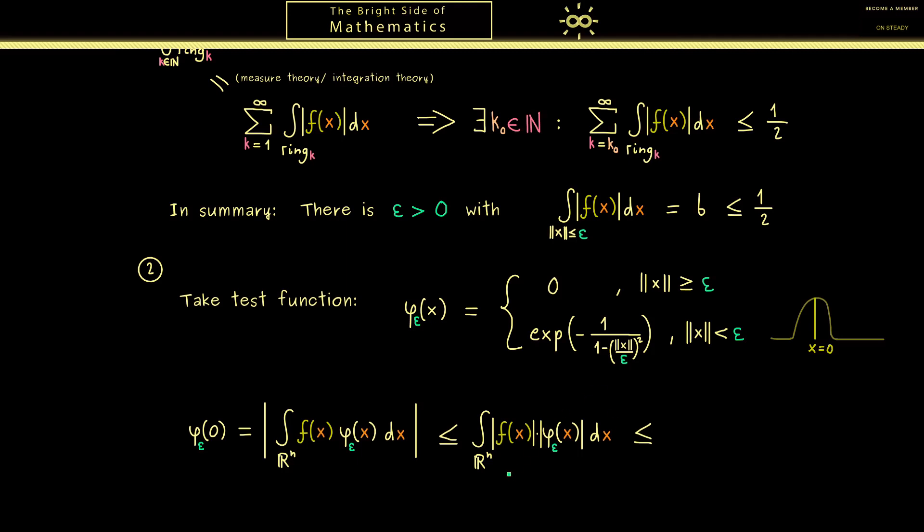This means that we can just pull out the supremum norm of the test function. However before we do that we should change the region where we integrate over to the epsilon ball. Because outside of the epsilon ball everything is 0 by the test function. And maybe now you already see why we care so much about the epsilon ball.